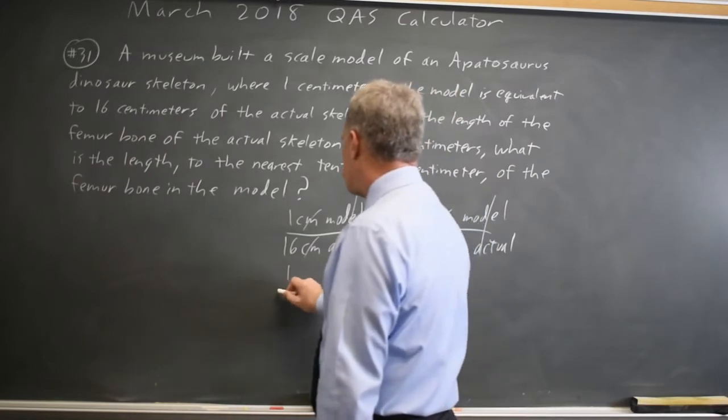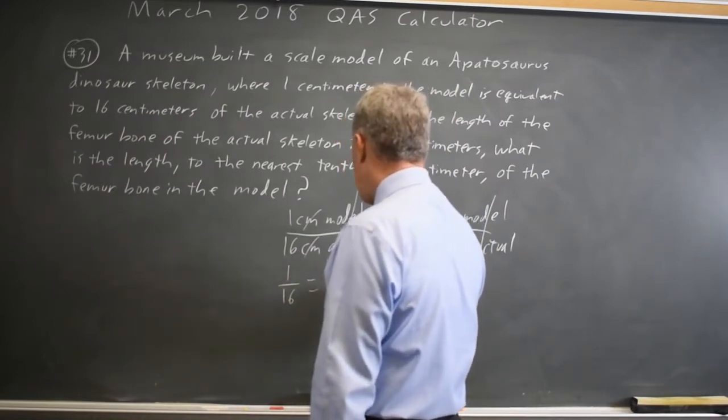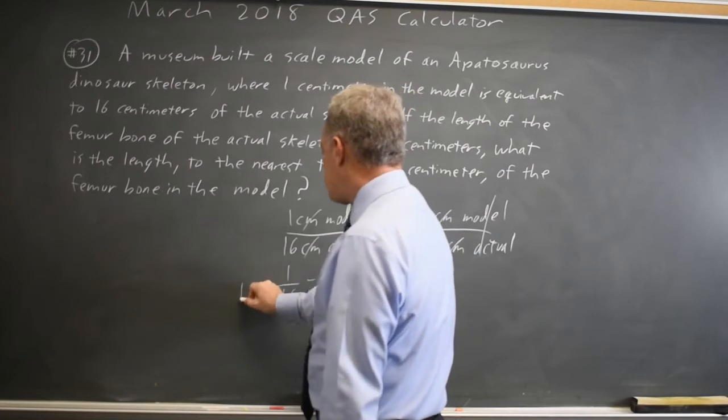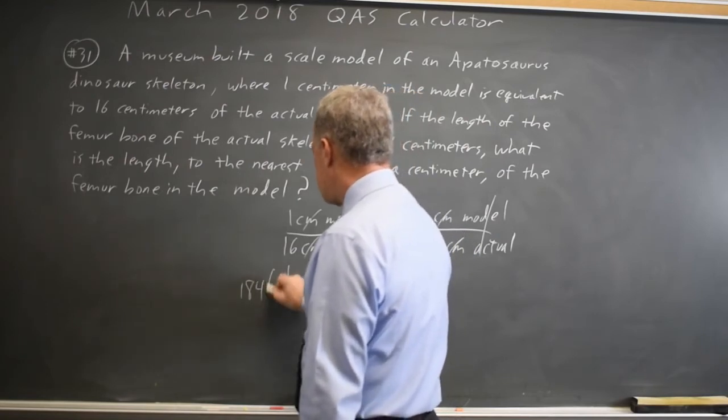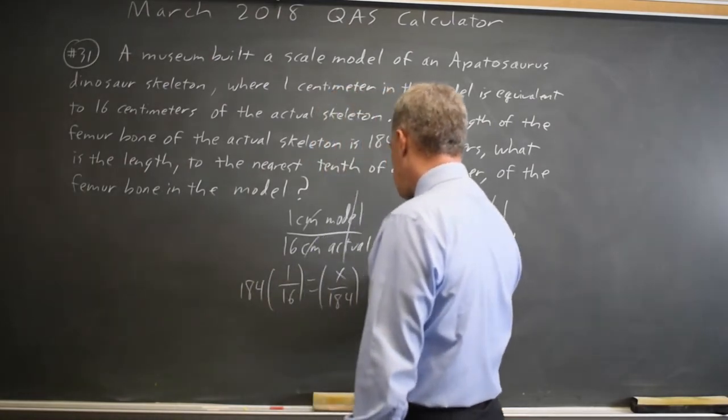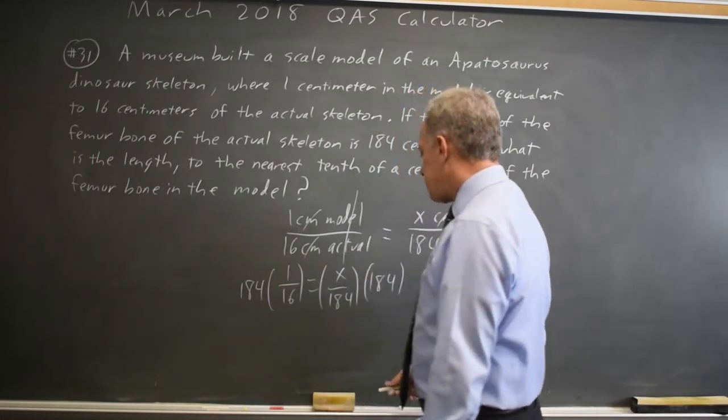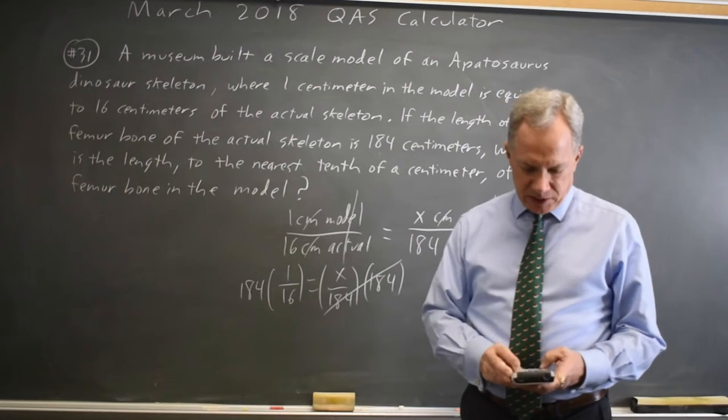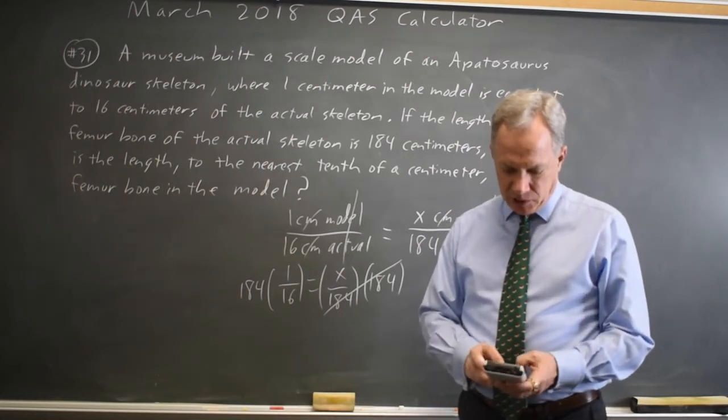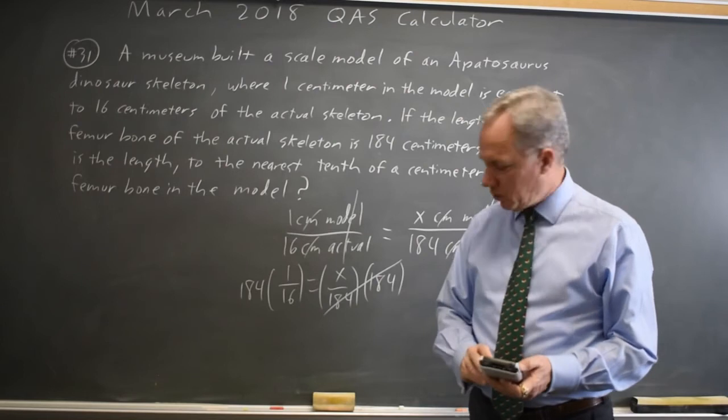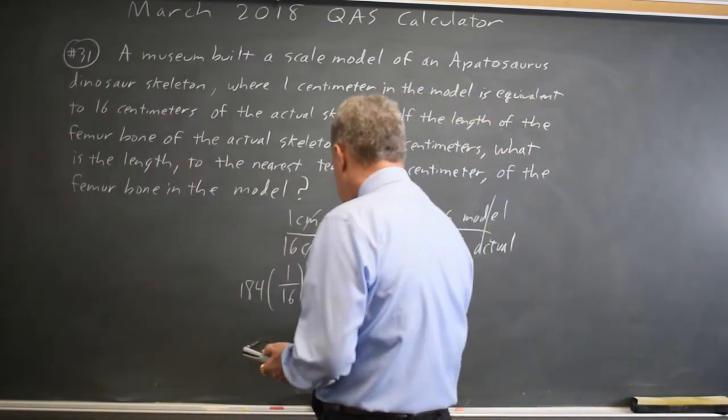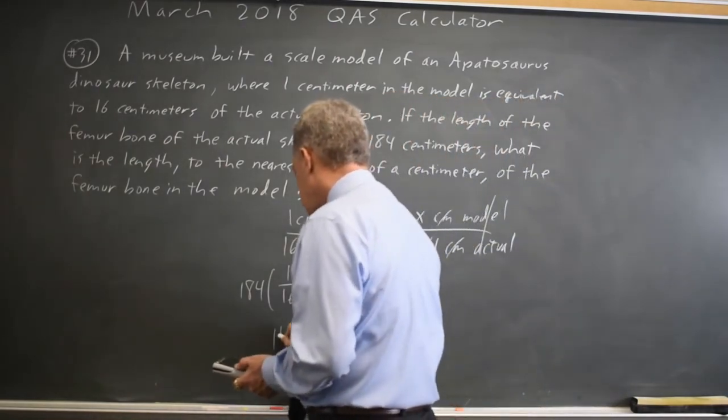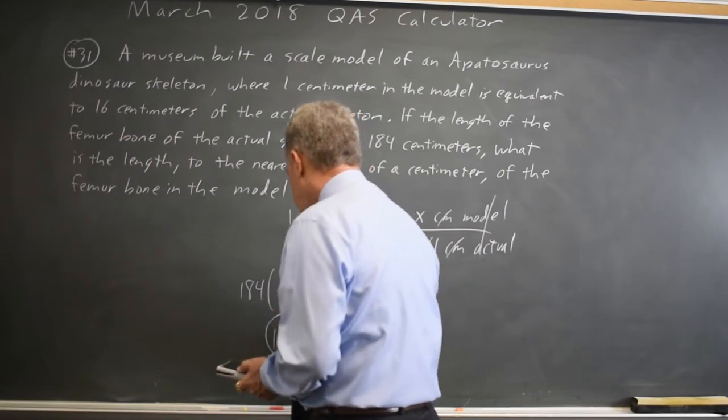so I have 1 over 16 equals x over 184. And if I multiply both sides by 184, I'll get x by itself because 184 over 184 is 1. So x equals 184 over 16, which is 11.5, and that would be my answer.